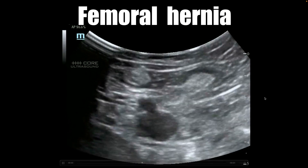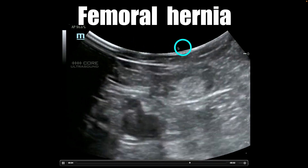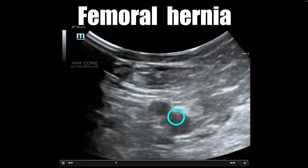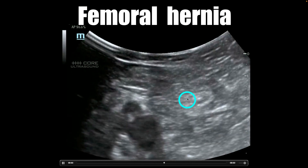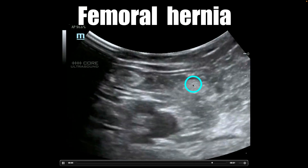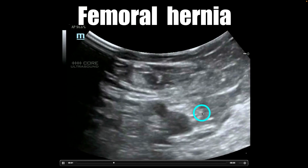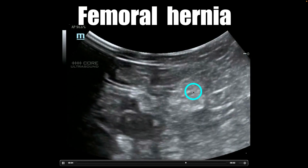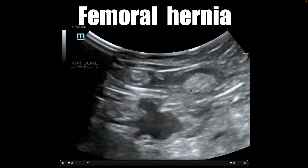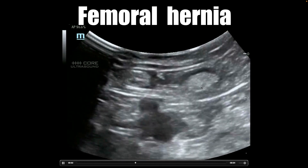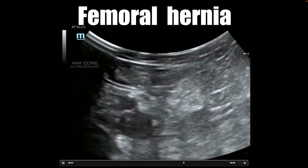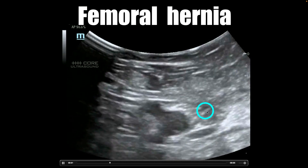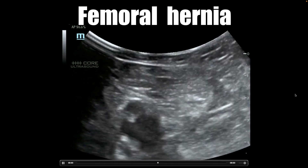This is an example of a femoral hernia. Notice the curvilinear sector here — we have the femoral vein right here, and you can see that there is a little chunk of collapsed intestine. It actually starts down here and kind of goes up into this area. This patient had this out; it was reducible, but you can see it even without any special maneuvers. Little chunk of intestine right here, right next to those femoral vessels.